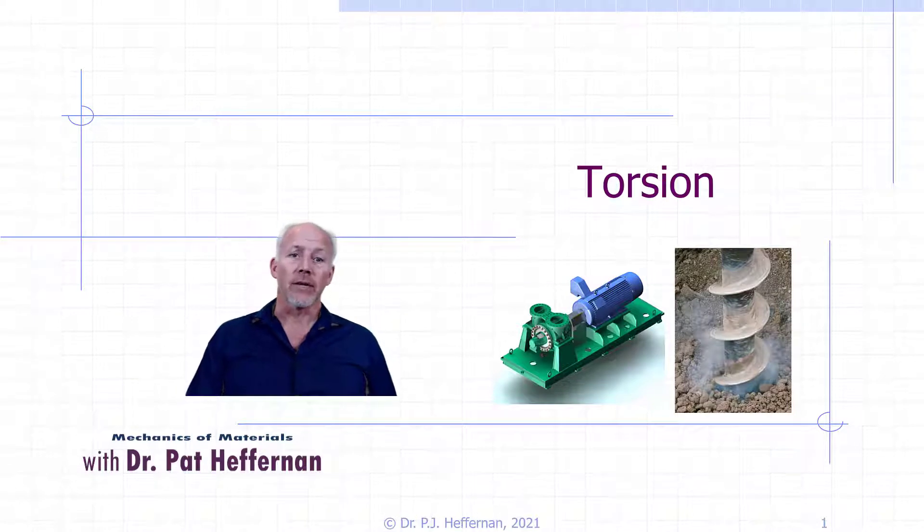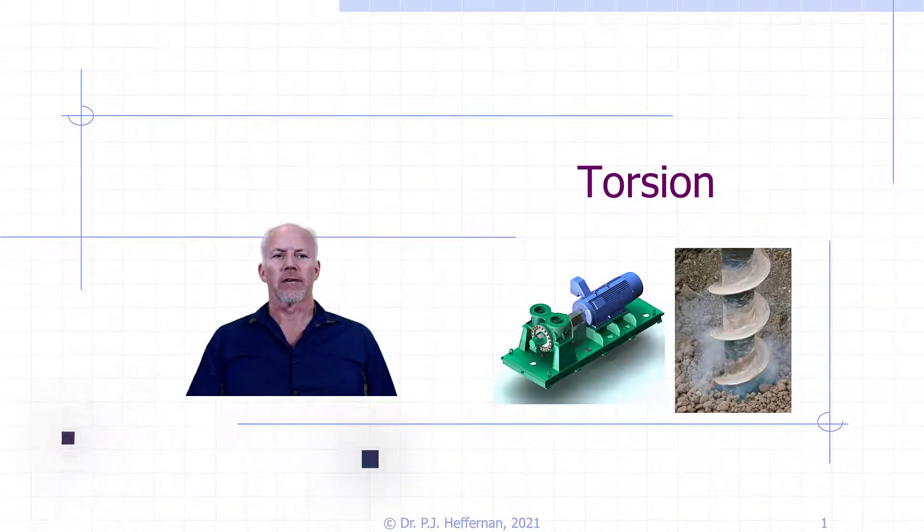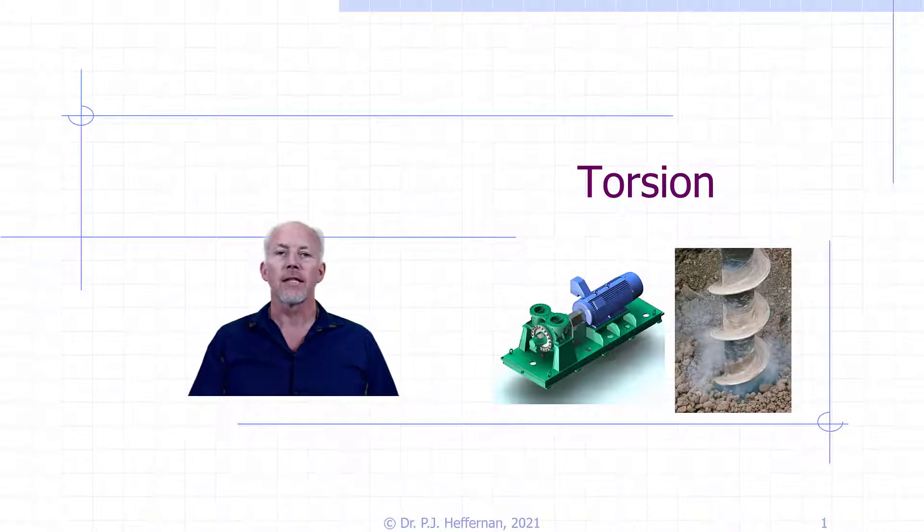In this initial examination, we're going to limit our consideration to members that have a circular or tubular cross-section. We're going to be looking principally at things that look like shafts.